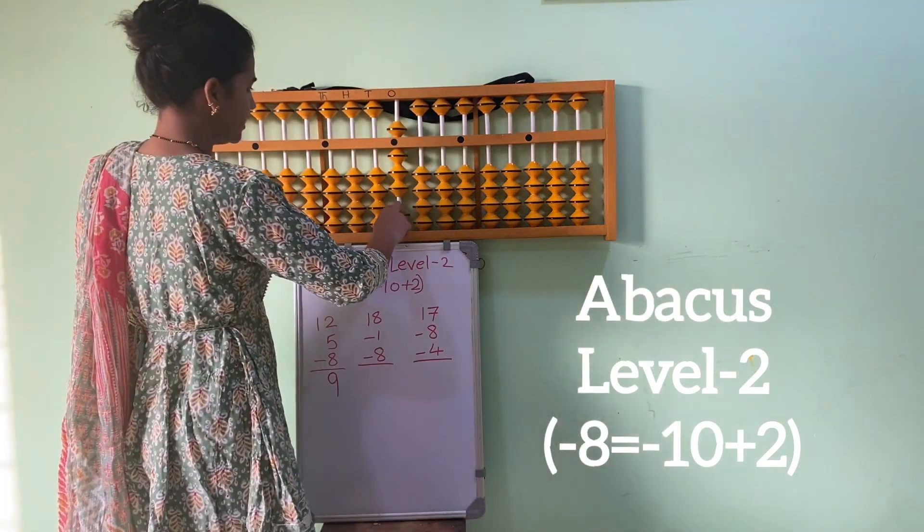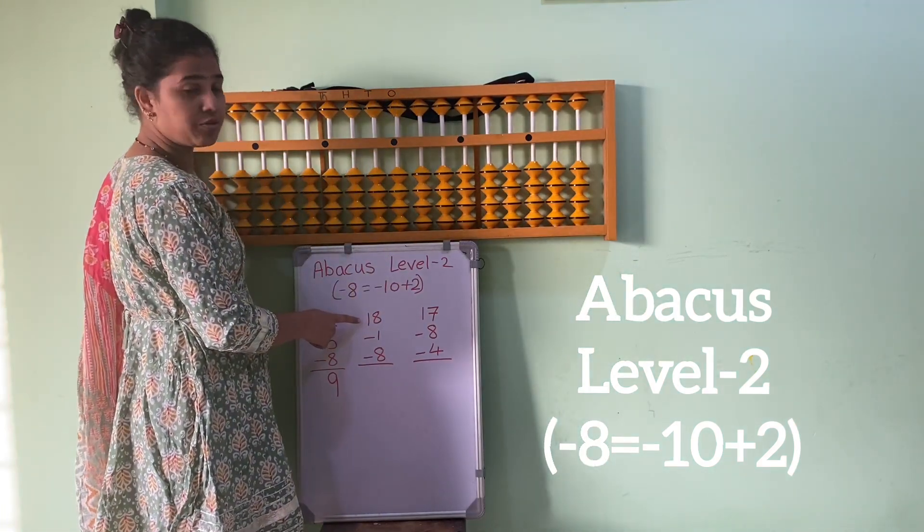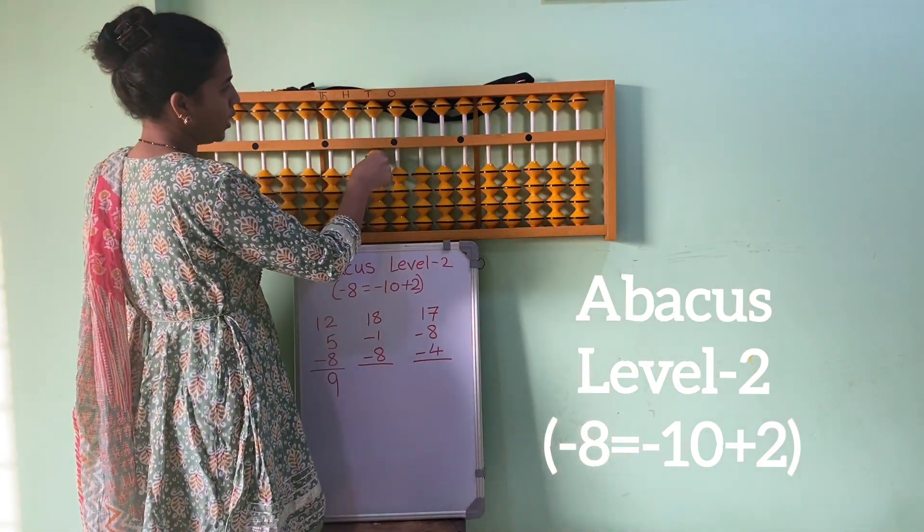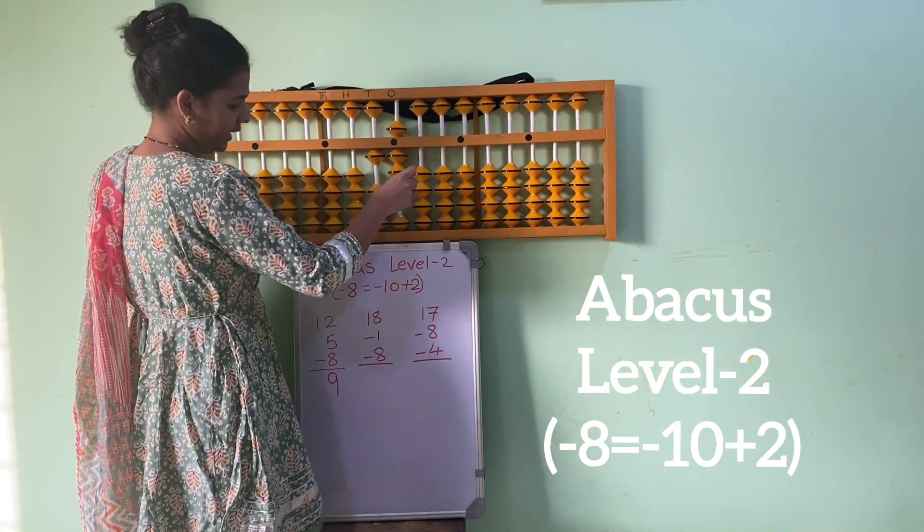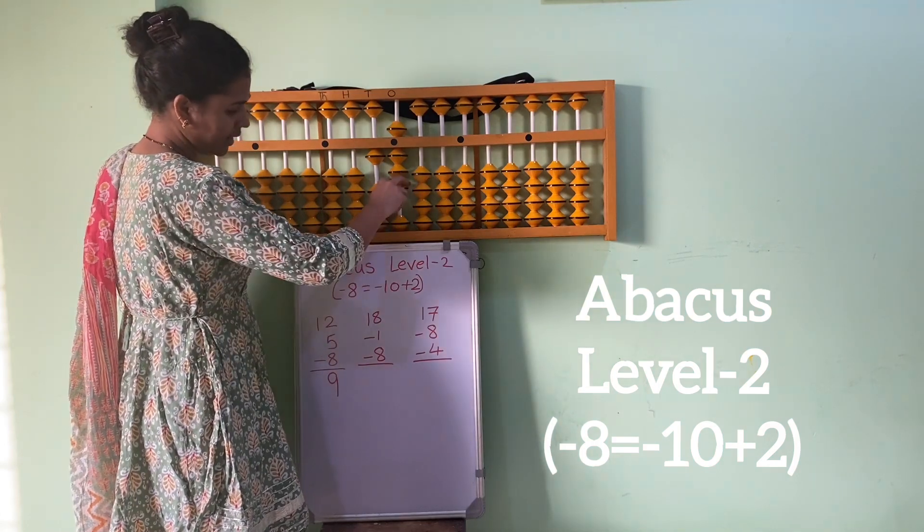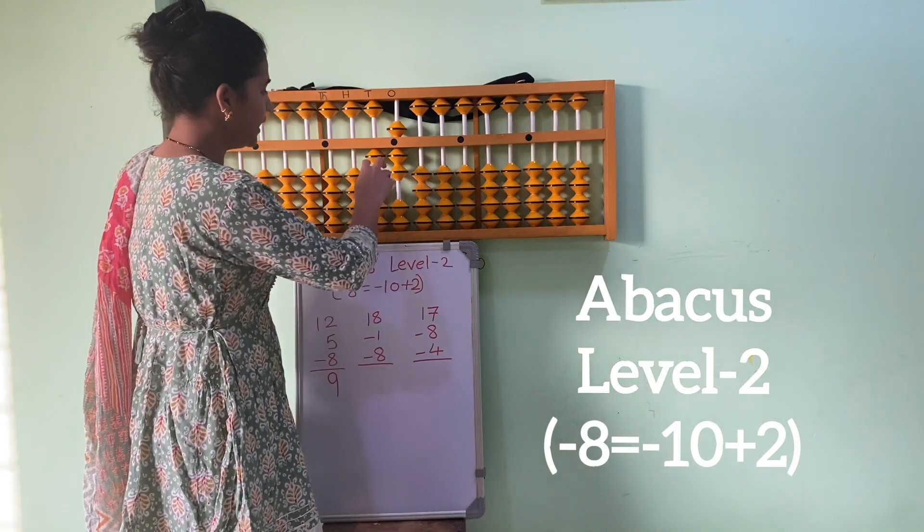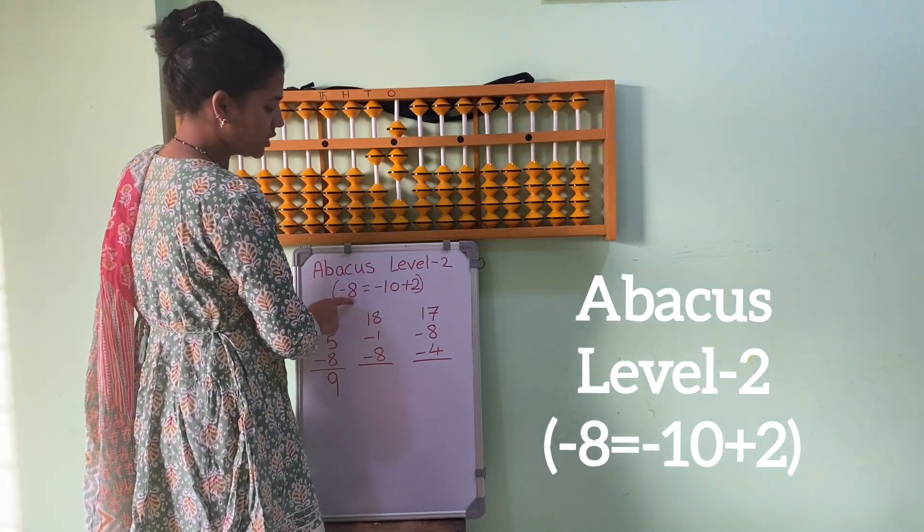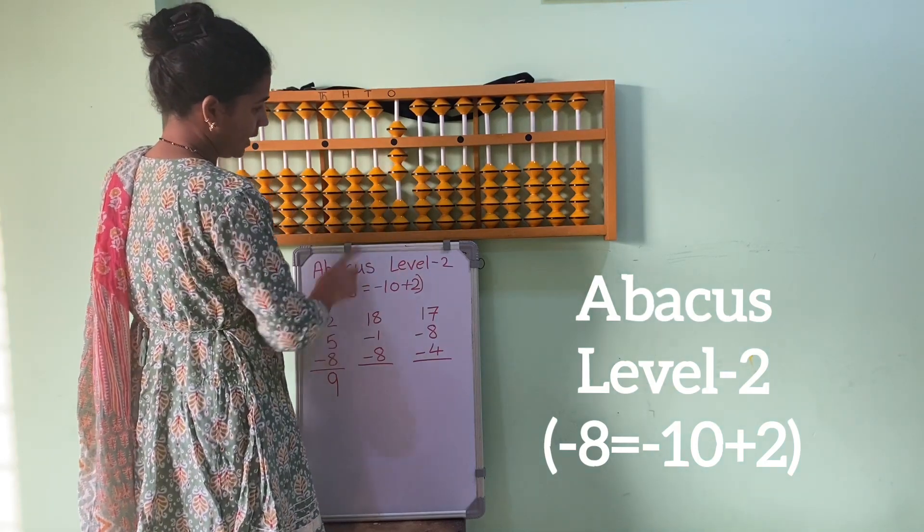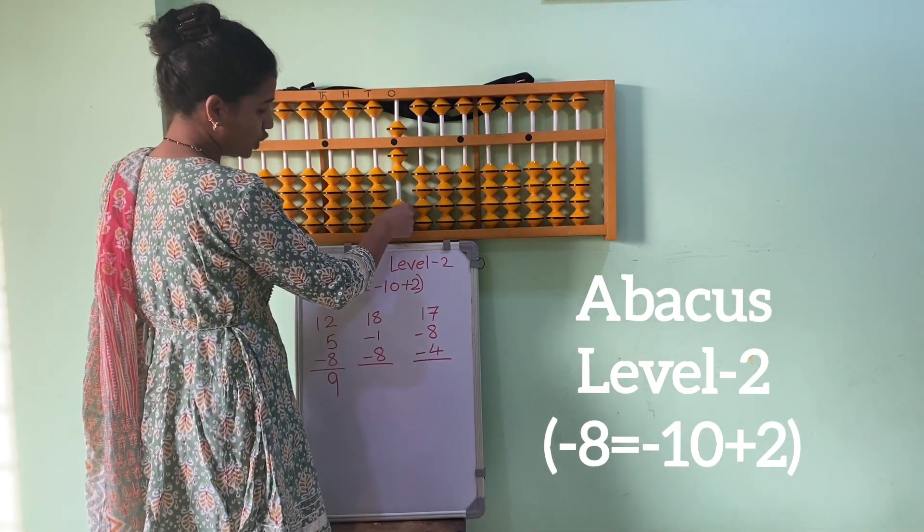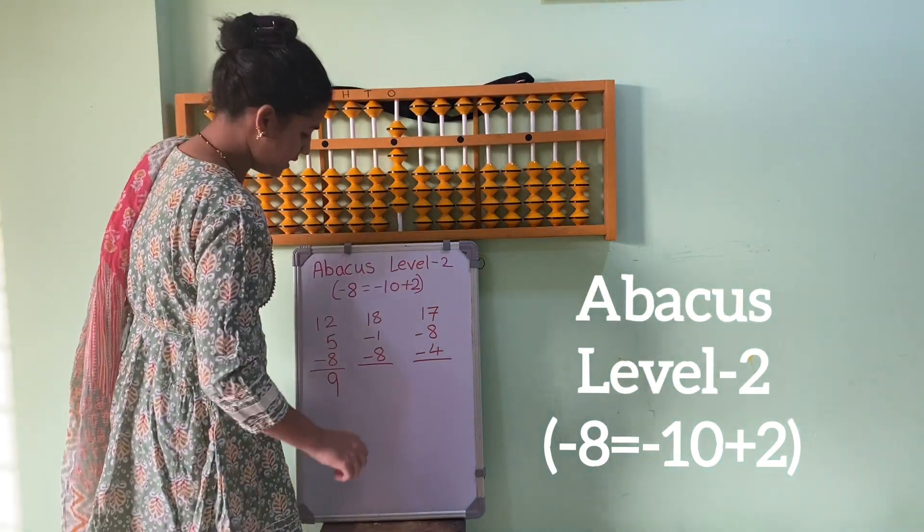Let's see another sum: 18. What is the first number? 18. 1, then 8. 5, 6, 7, 8. Minus 1. Now minus 8. So minus 8 me kya karenge humara? Formula use karenge humara. Minus 10, minus 10 plus 2. 1, 2. So the answer is 9.